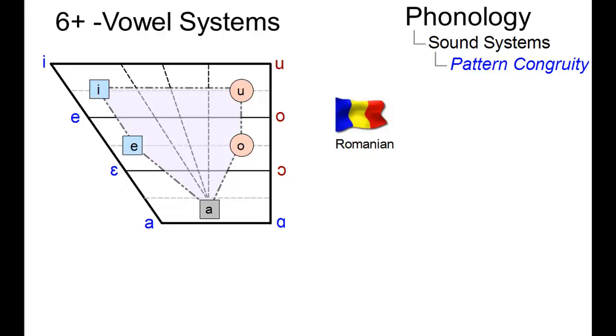Our next example, Romanian, belongs to the majority of languages that have between five and seven vowels. And here a system of central vowels completes the pattern.